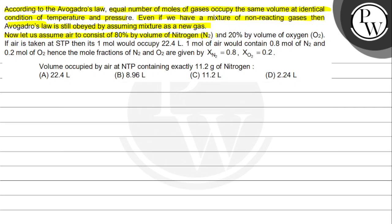Now let us assume air consists of 80% by volume of nitrogen (N2) and 20% by volume of oxygen (O2). If air is taken at STP, then one mole would occupy 22.4 liters. One mole of air would contain 0.8 mole of N2 and 0.2 moles of O2.